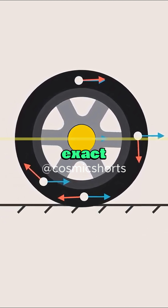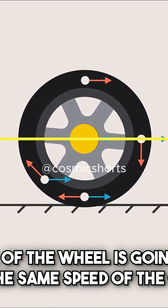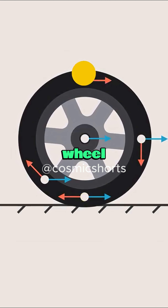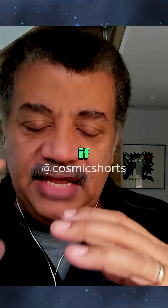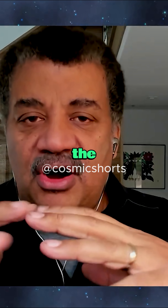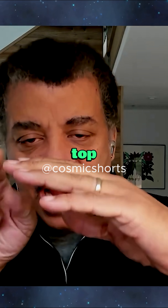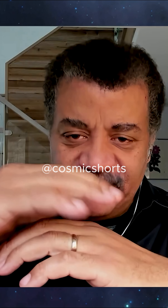The center of the wheel is spinning, but the exact center is going forward at the same speed the car is. The top of the wheel is going forward at twice the speed of the car. If the chassis of the car is moving at the speed of the car, obviously the top of the wheel is moving faster than the chassis.